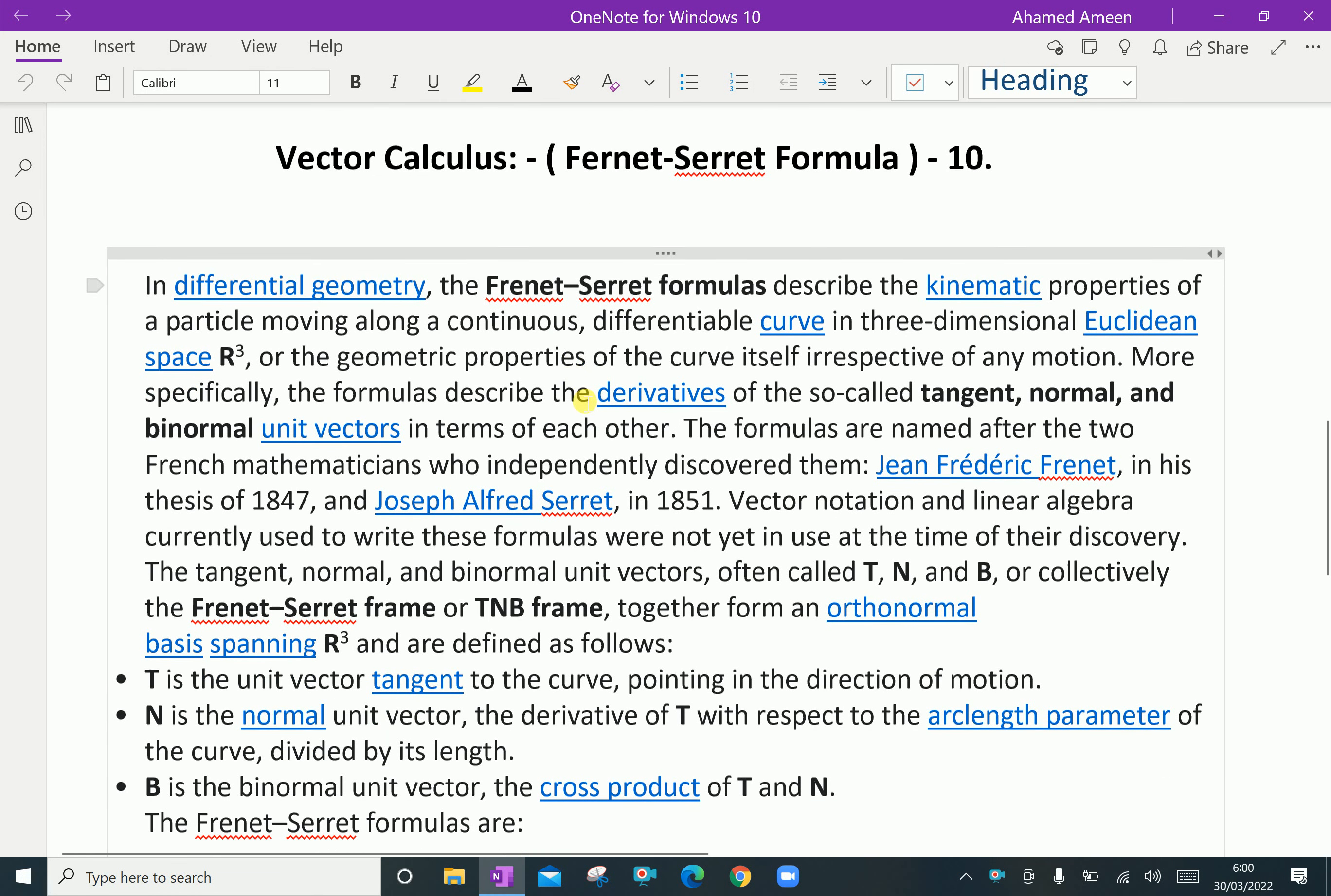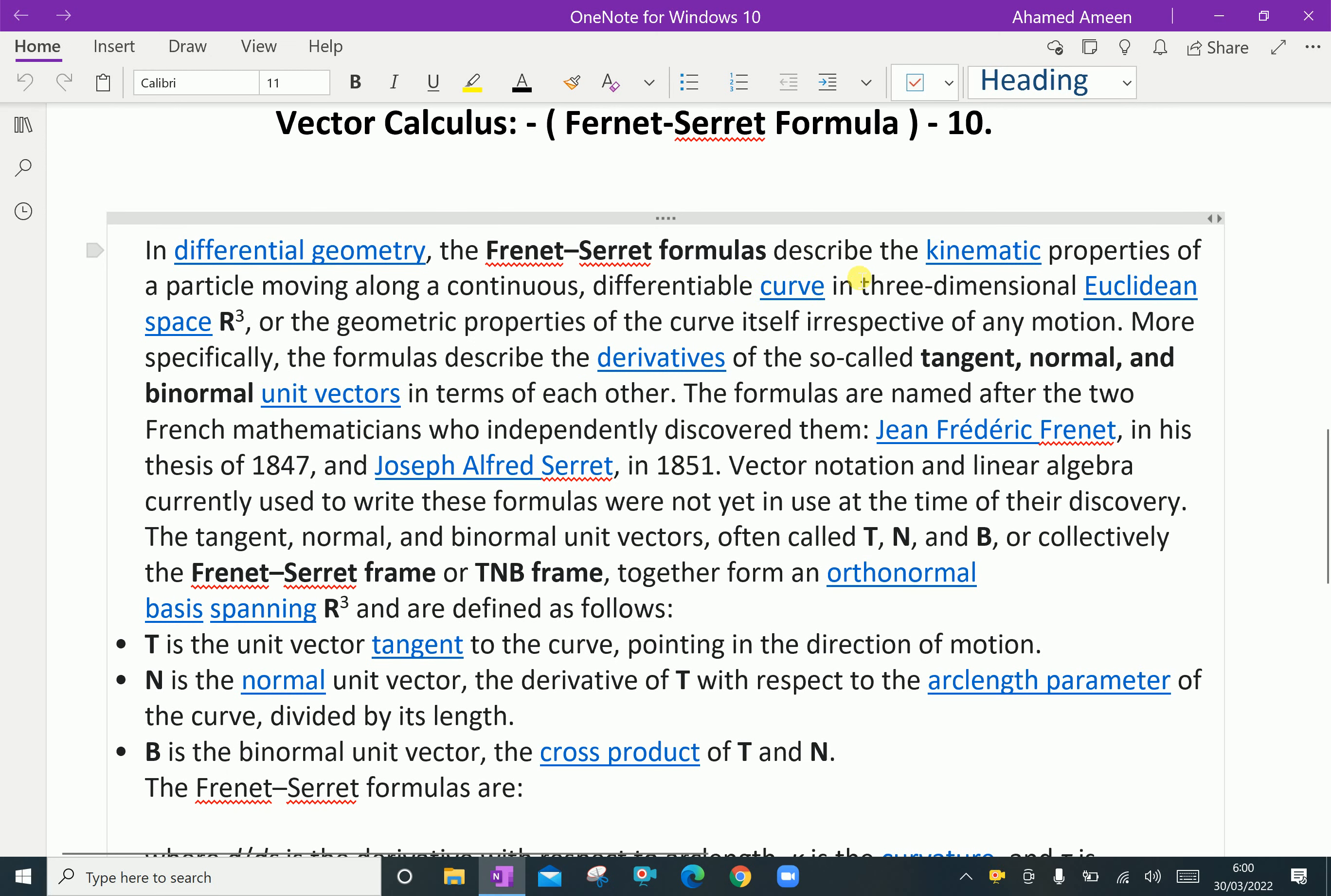In Differential Geometry, the Frenet-Serret Formula describes the kinematic properties of a particle moving along a continuous differentiable curve in three-dimensional Euclidean space, or the geometric properties of the curve itself irrespective of any motion.